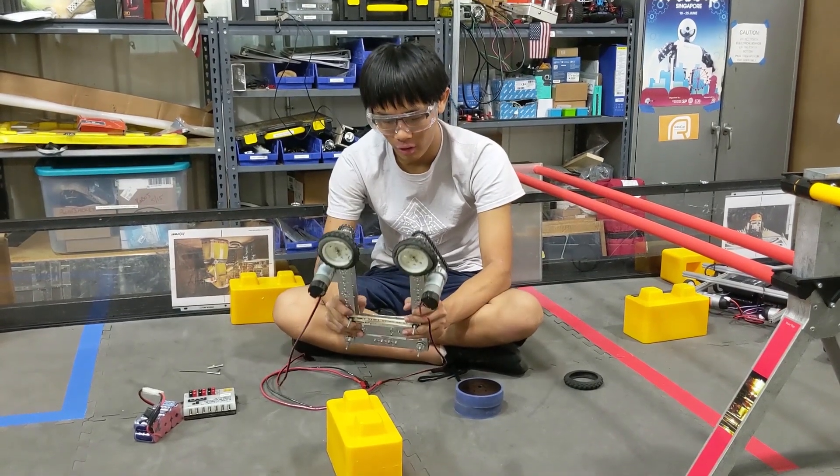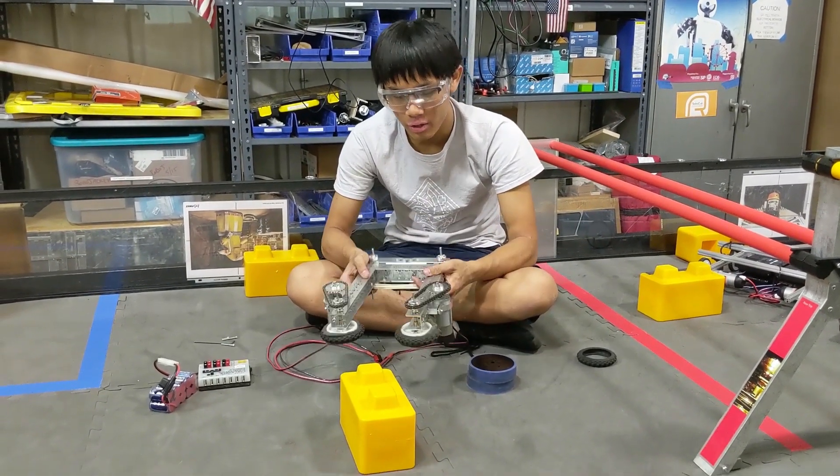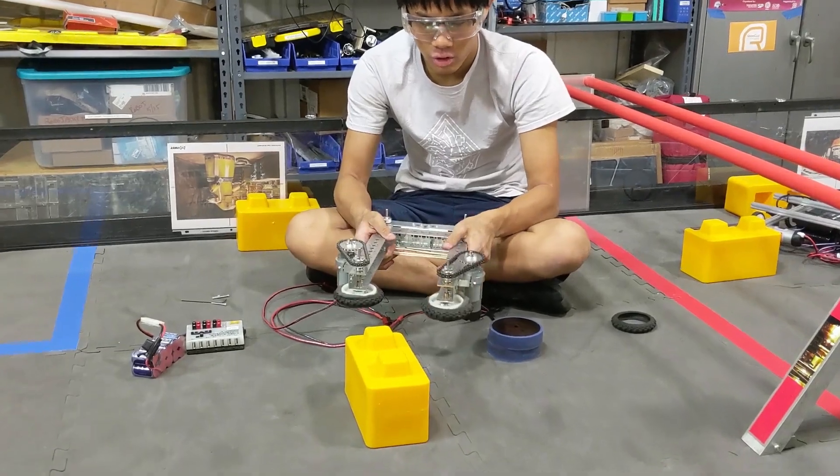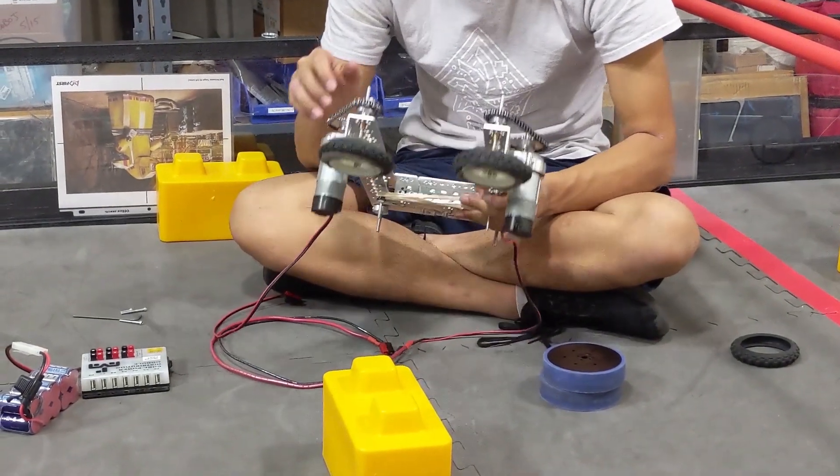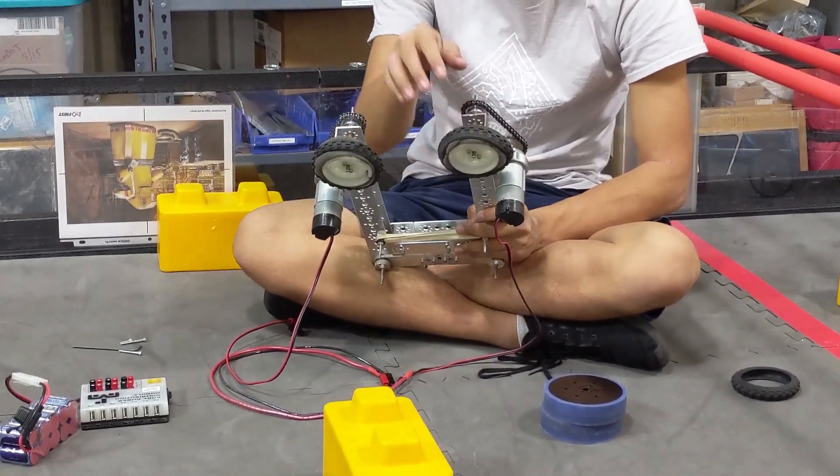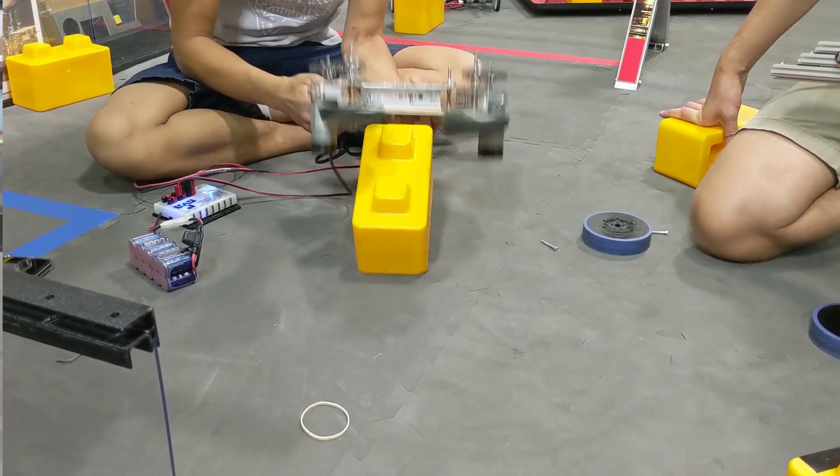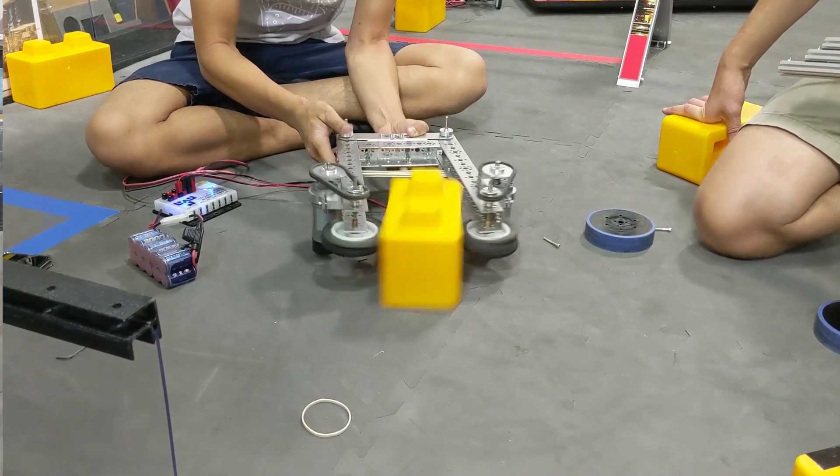This system is part of our intake mechanism, and the current iteration involves two opening flaps that allow the block to come in. It utilizes two wheels at the front that both spin inwards, which propels the block into the robot.